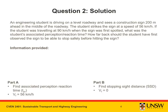We are going to divide this question into two parts. The first part is to calculate the associated perception reaction time of the student — in this instance the student hits the sign at a final velocity of 56 kilometers per hour. In the second part, we are going to find the stopping sight distance, which is the safe stopping distance for which the student will hit the sign at zero velocity. Therefore, the student will just stop before hitting the sign. The stopping sight distance will tell us how far back the student should have first observed the sign in order to stop safely. Let's draw a picture of what's happening.